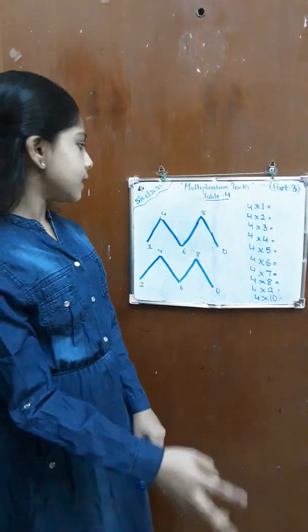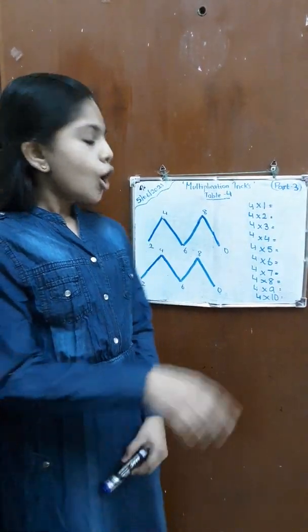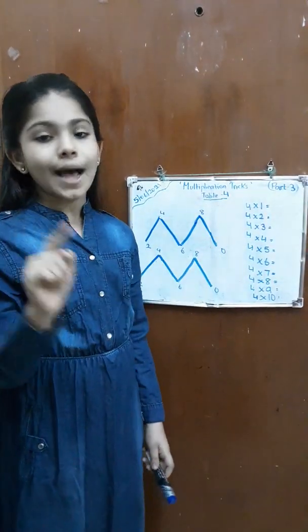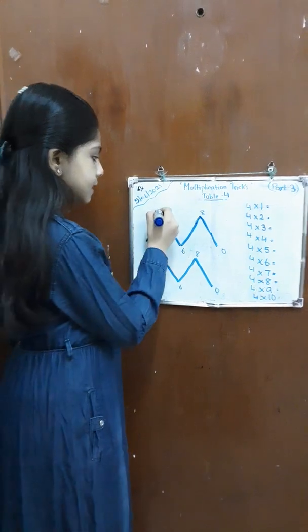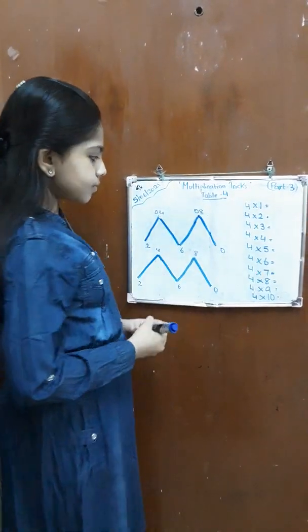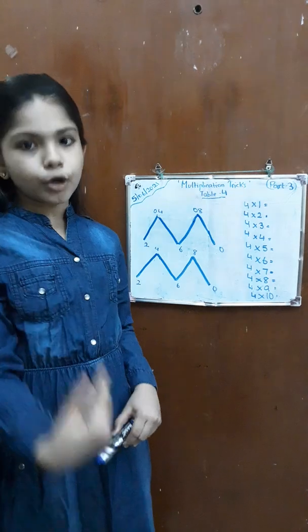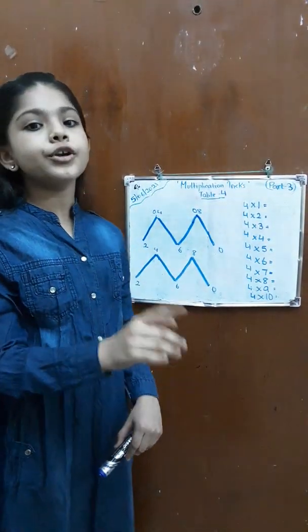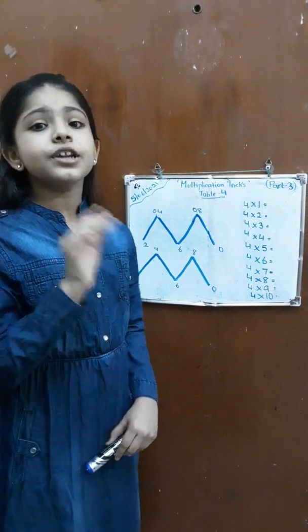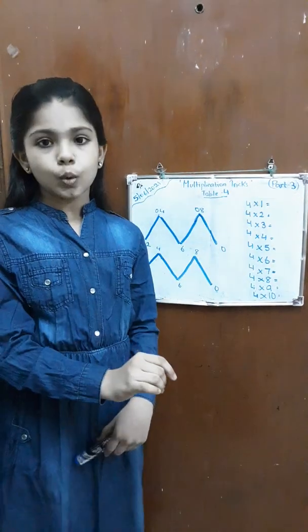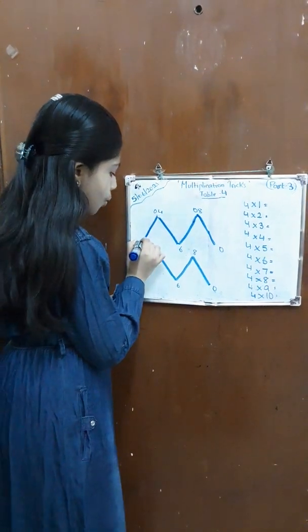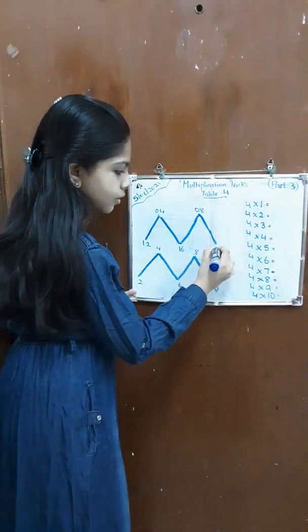Now let's write the tens place. On the top row of the first M, we are going to write the number 0 as the tens place. That means 0, 0. Now coming to the bottom row of the first M, we are going to write the number 1 except for the last number which is 0. Then we are going to write the number 2. So that means 1, 1, 2.